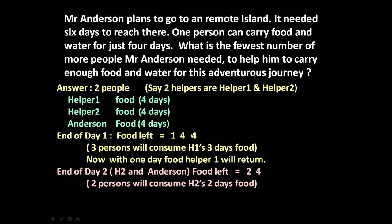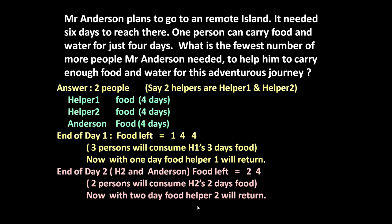Now only helper two and Anderson are traveling. On the next day, two persons travel together — H2 and Anderson. They consume two days of food from H2's supply. So now H2 is left with two days of food and Anderson is left with four days of food at the end of day two. Since H2 has exactly two days of food to return home, Anderson sends helper two back.